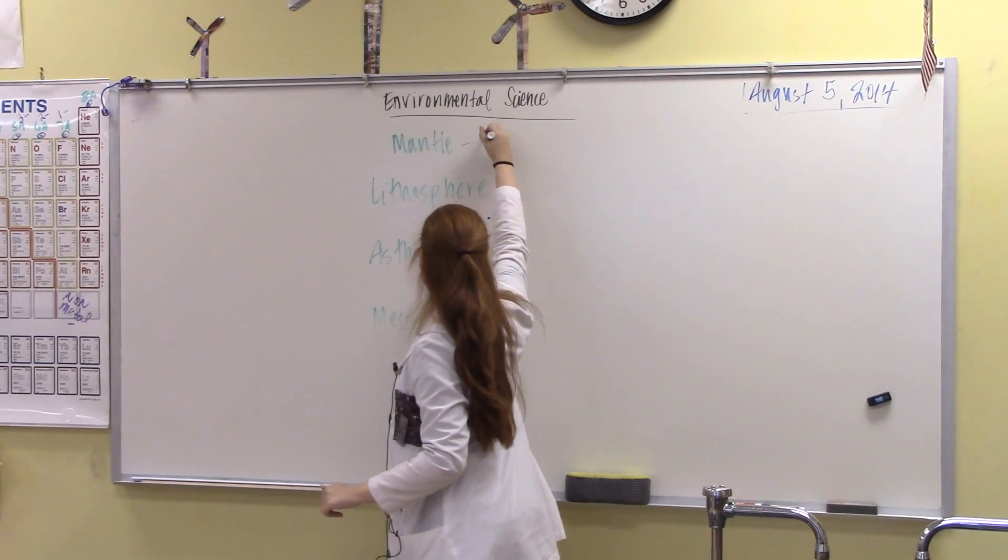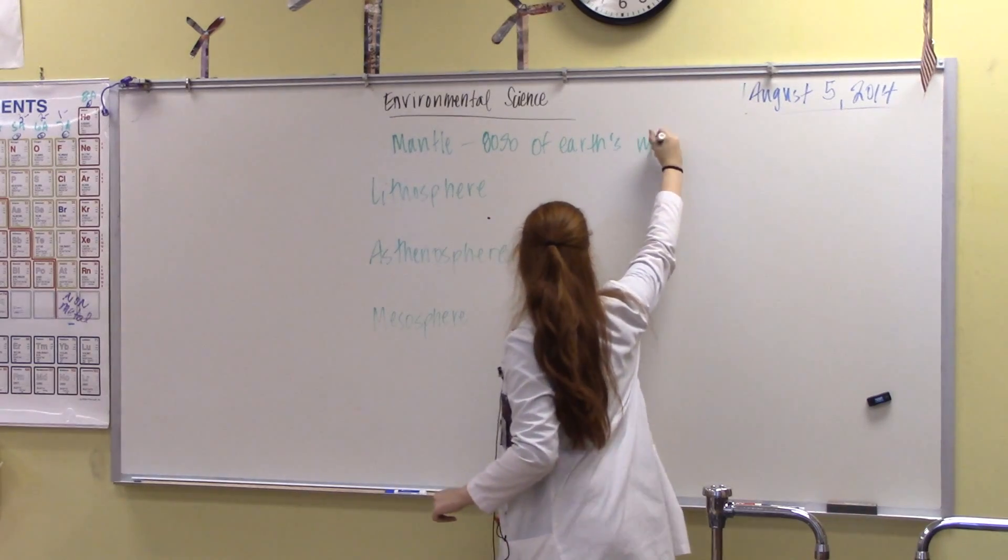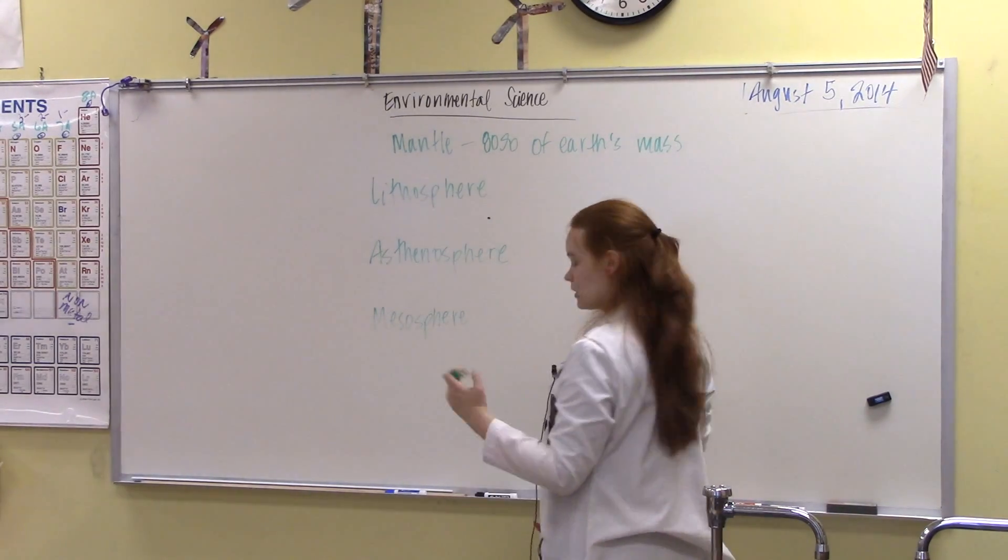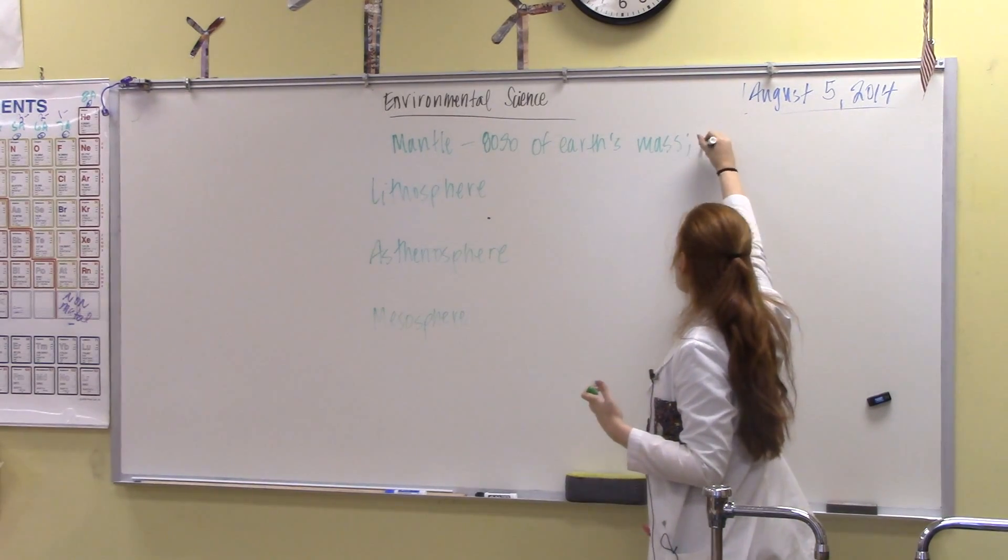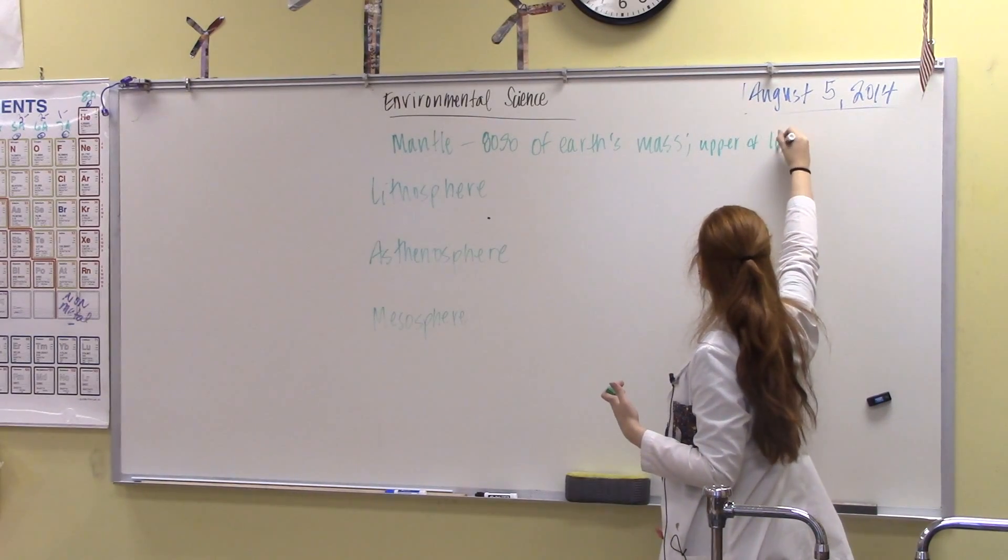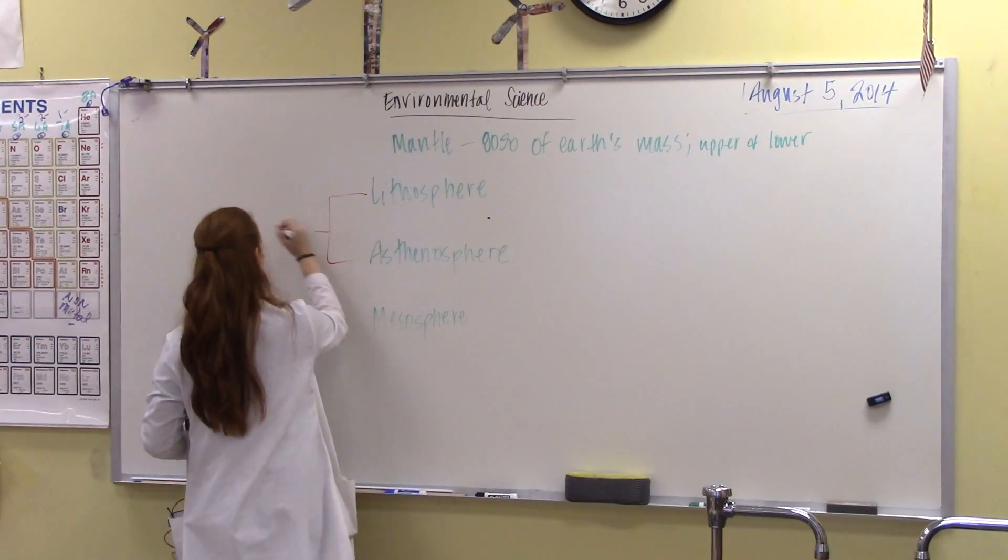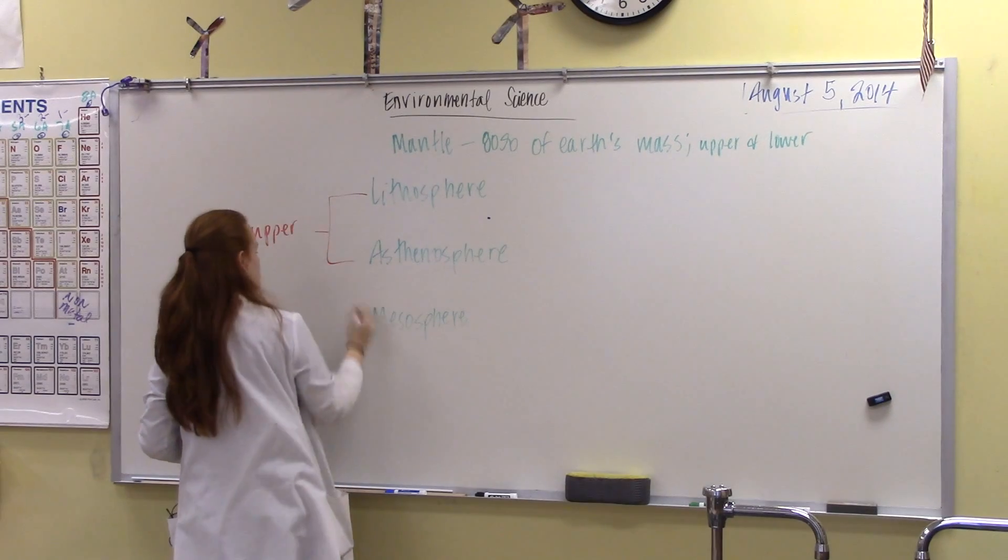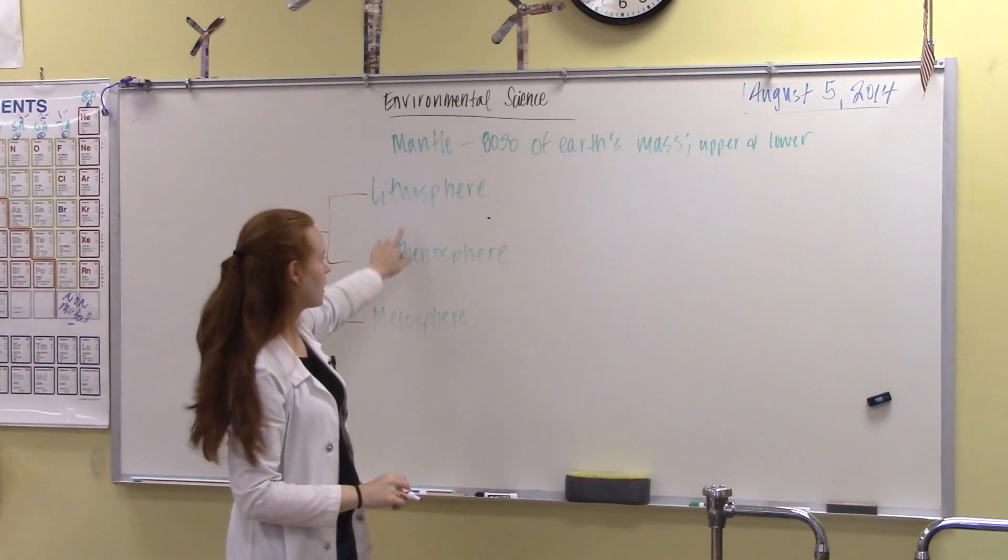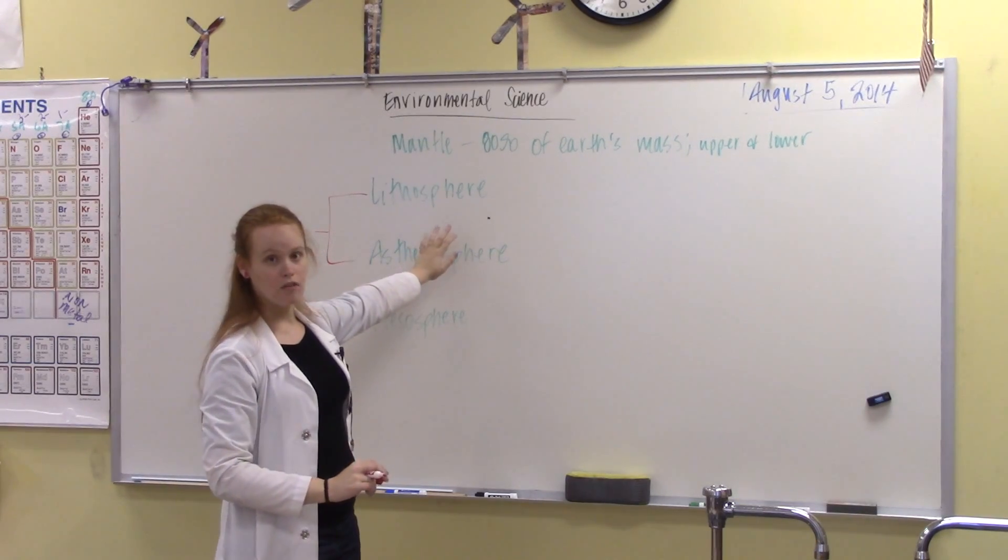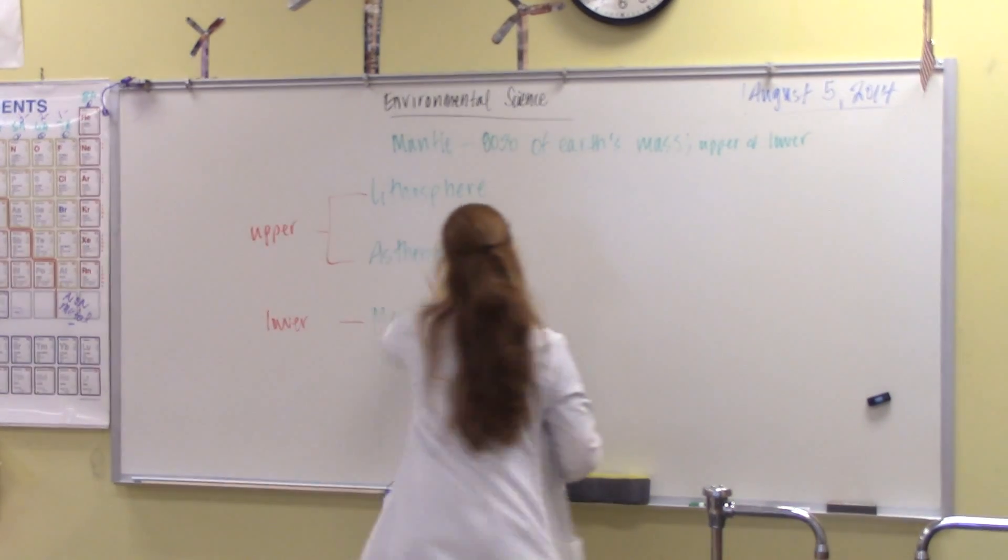Overall, the mantle makes up 80% of the Earth's mass. That is a lot. The mantle makes up over 80% of the Earth's mass. Now, there is the upper mantle and lower mantle. So, I will go ahead and tell you that these two, the lithosphere and the asthenosphere, these are upper. Mesosphere, poor thing, it's lower. So, another way I remember this, the top two are like my parents and this is me. They go together. They are higher up in the hierarchy of my family than I am. So, they are upper.